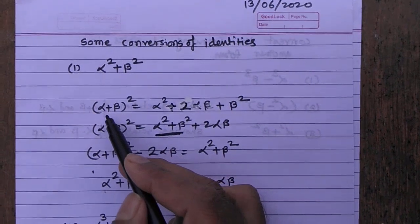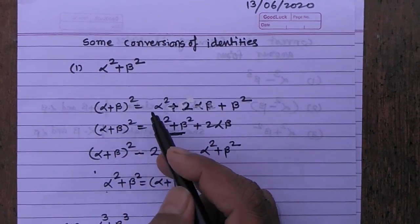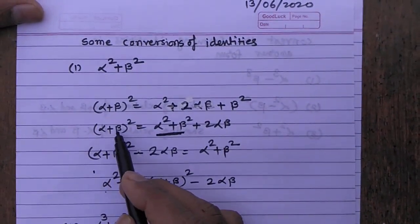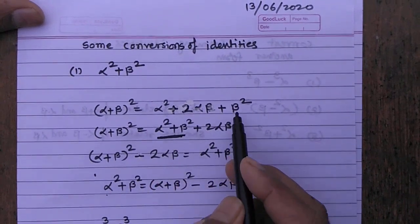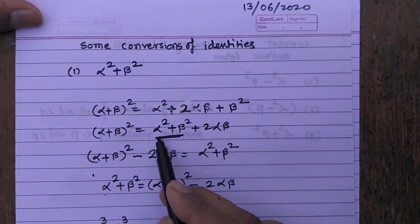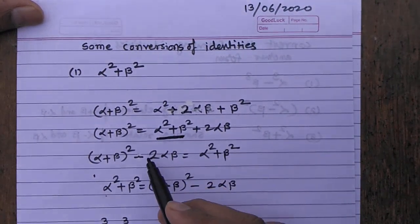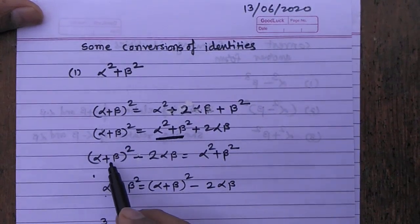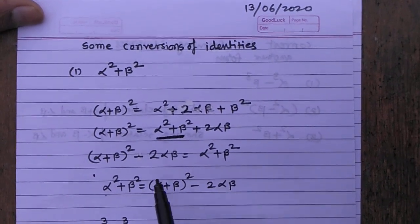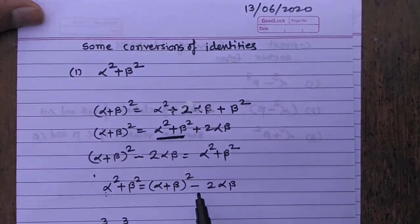I have written the same formula in the form of alpha plus beta square. Alpha plus beta whole square is equal to alpha square plus 2 alpha beta plus beta square. Collecting alpha square plus beta square together and transposing 2 alpha beta to the left side, we get: alpha square plus beta square is equal to alpha plus beta whole square minus 2 alpha beta.